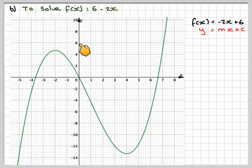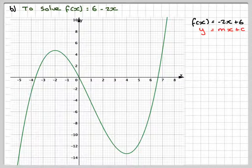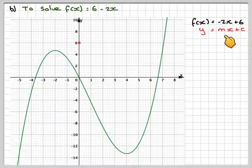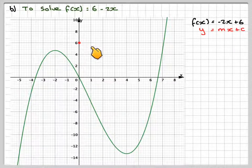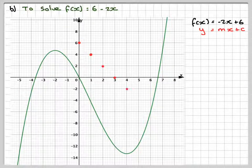c tells me where it cuts the y axis. And then for every one along we go 2 down. But remember the scales are different. So for every one along that will be 2 down. So the next point we'll go there. Here, so you need to read the scales on graph properly.